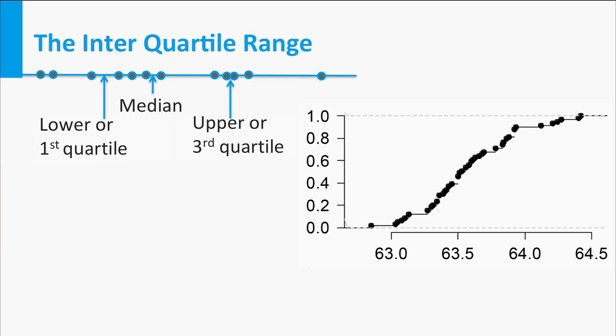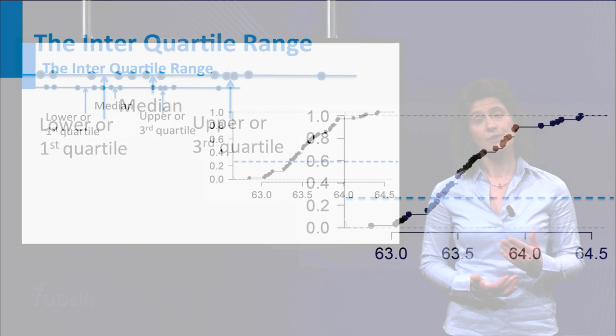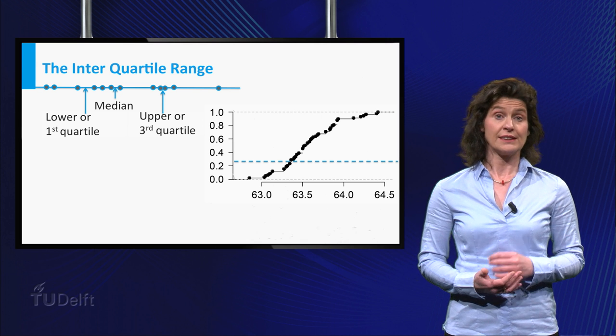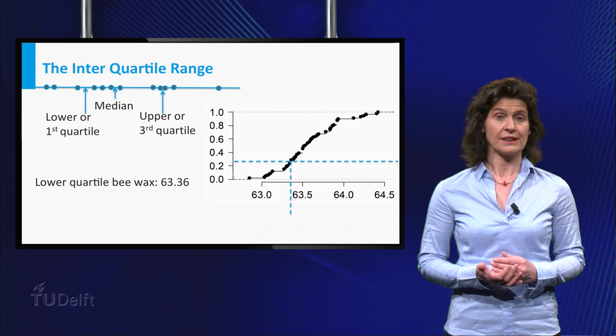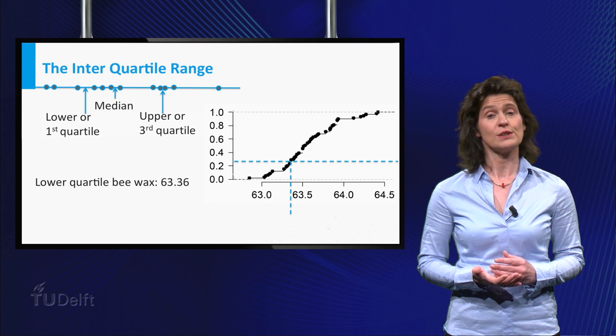There is a natural connection of the quartiles with the empirical distribution function. This picture shows the empirical distribution function of 59 measured melting points of a natural b-wax. Add a horizontal line at height 0.25 to this plot and check where it hits the empirical distribution function. The x-coordinate of this point is the lower quartile, in this case 63.36.